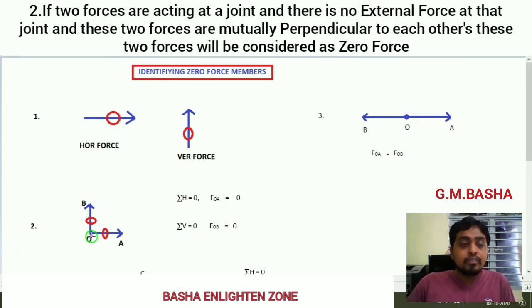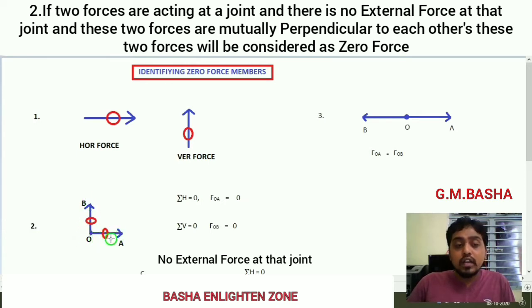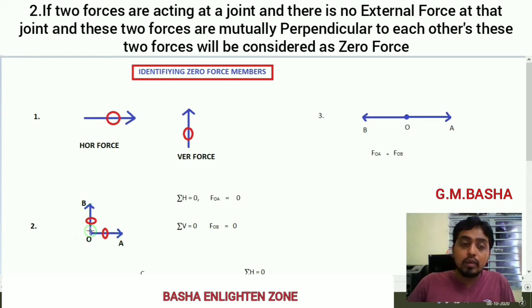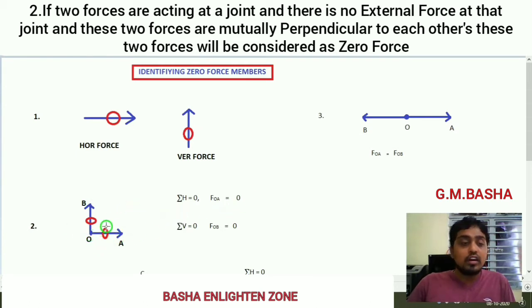Second point: if two forces are acting at a joint O — one force OA and another force OB — and these two forces are acting mutually perpendicular to each other, that is OA is perpendicular to OB, then these two forces are also considered as zero forces. If I am resolving these forces horizontally, only horizontal forces will be considered, therefore the force in member OA will be equal to zero as there is no other force.